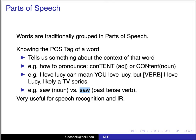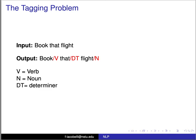We're going to look at methods using probabilistic techniques to infer the part of speech of a certain word. Like all methods, it needs to be trained. When you look at training data, you see something like: 'book' — verb, 'that' — determiner, 'flight' — noun. We train with that. The goal is that if the input is a sentence without tags, the output will be that sentence with the tags added to it.